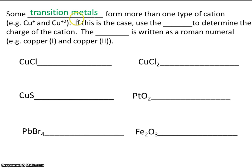Some transition metals—you remember that transition metals are the metals that appear in the middle of the periodic table—form more than one type of cation. For example, we have copper plus one (Cu+) and copper plus two (Cu2+). If this is the case, we have to use the anion (remember that's the negative one, the one that's written second) to determine the charge of the cation. And then the charge is written as a Roman numeral—for example, copper (I) and copper (II).